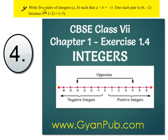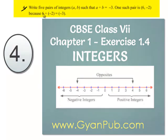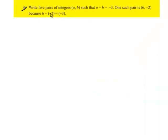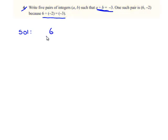We will see the 4th question. The question is: write 5 pairs of integers such that a divided by b gives negative 3. One such pair is 6, minus 2, because 6 divided by minus 2 gives minus 3. Coming to the solution, it is given that 6 divided by minus 2 gives minus 3.